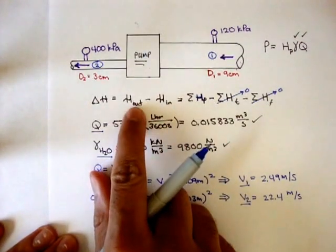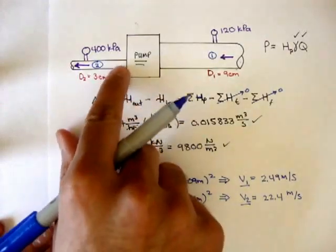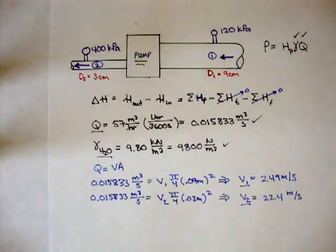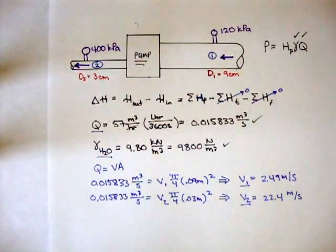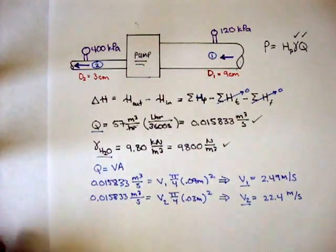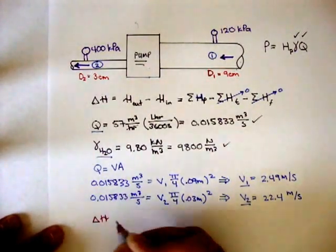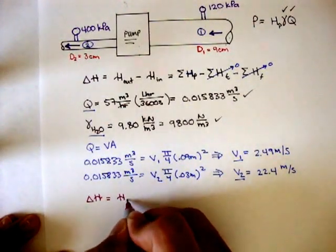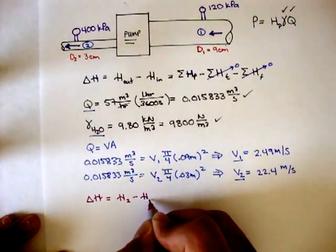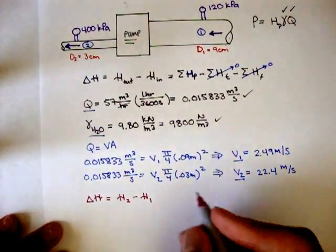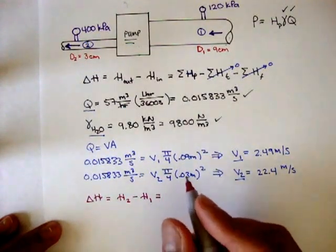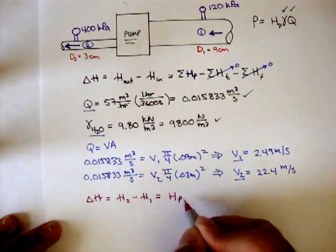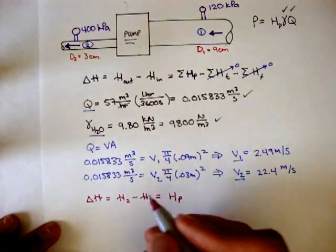Now, we can say our out is 0.2. The water's coming out, and our in is 0.1. So we can say that the change in total energy head of the system is going to be equal to H of 2 minus the total energy head of 1. And that's going to be equal to the summation of all the pumps. Because these two terms are 0. And there's only one pump, so we can say it's just H of P.